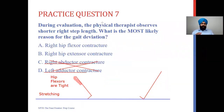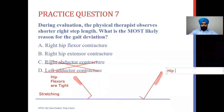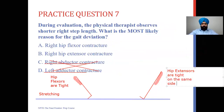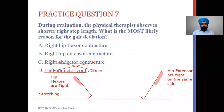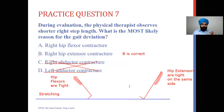Now for shorter right step length, the hip wants to go into flexion but something is stopping it. The muscles that stop flexion are the hip extensors — gluteus maximus and hamstrings. If the hip extensors are tight on the same side, they will prevent full flexion and cause decreased step length on that same side. So the correct answer is B: right hip extensor contracture causes a shorter right step length. To summarize: tight right flexors → limited extension → early toe-off; tight right extensors → limited flexion → shorter right step length.